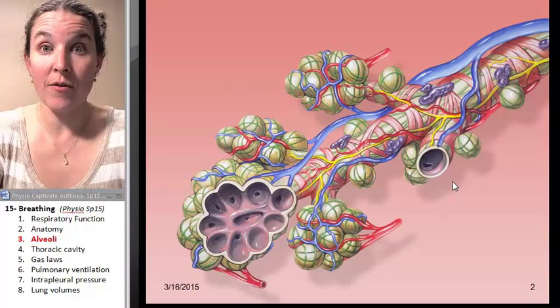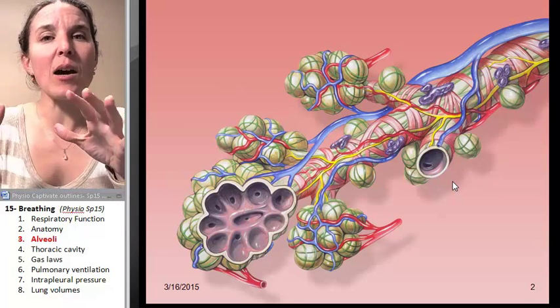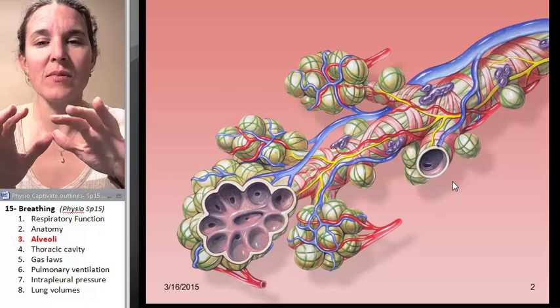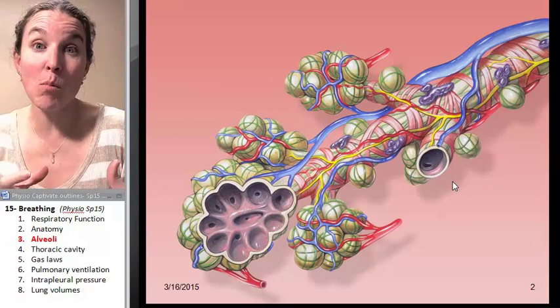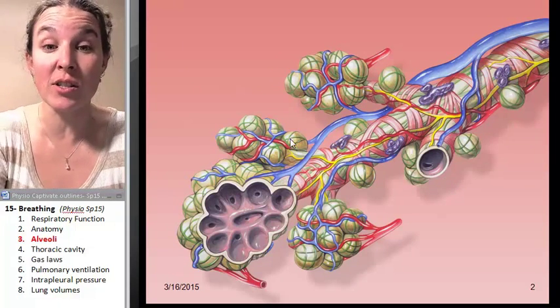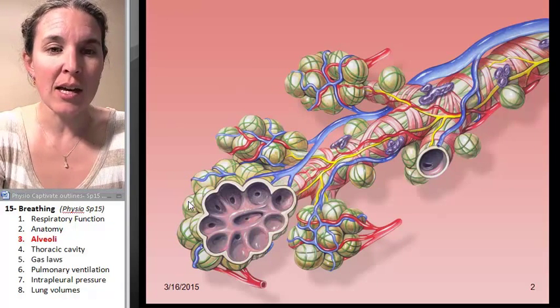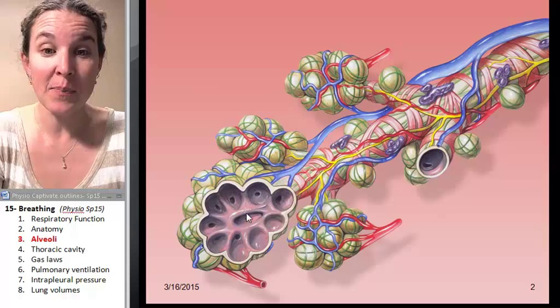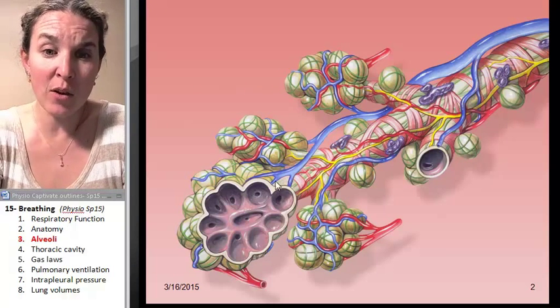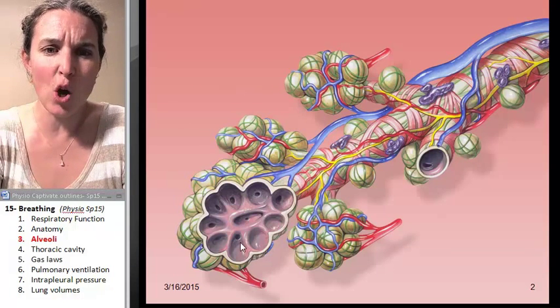This is a nice visual of a bronchiole culminating in multiple different clusters of alveoli. Each one of these little nubbins is an alveolus, and you can see if we cut down the middle of it, we can see that they're actually like little open balloons.